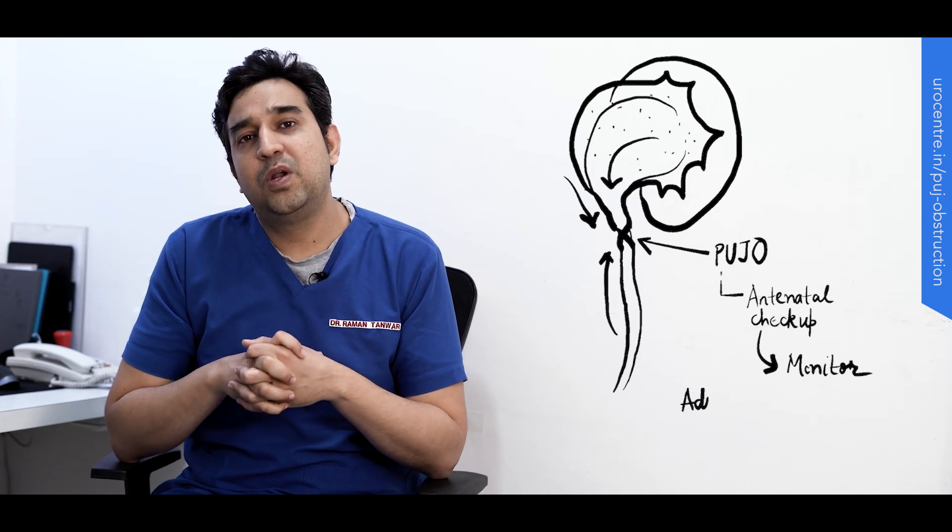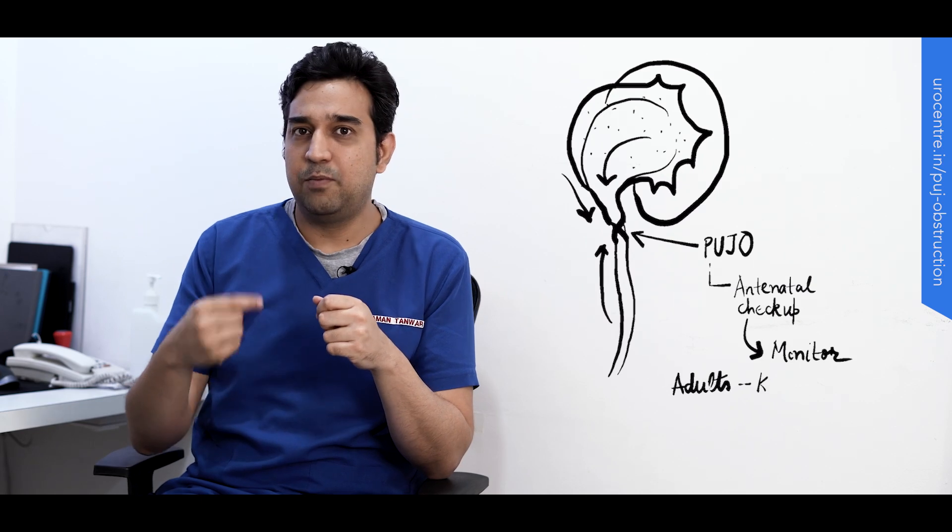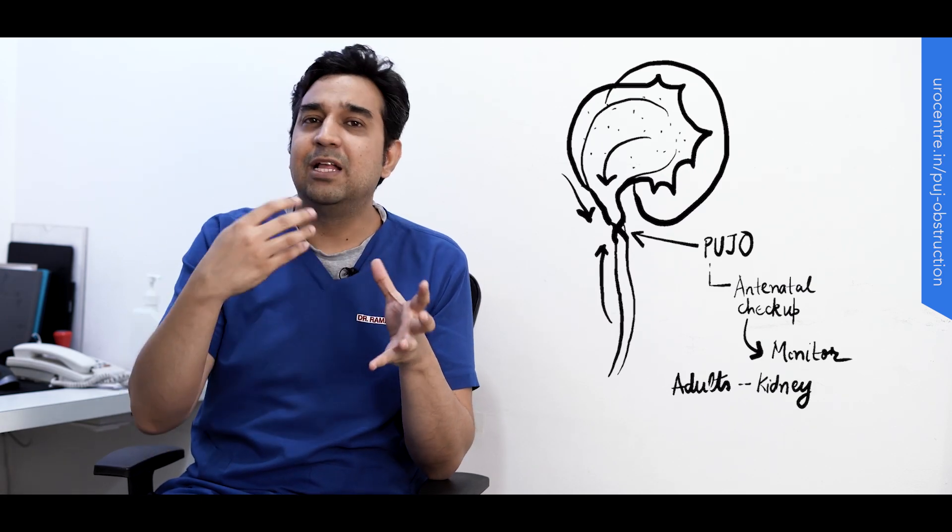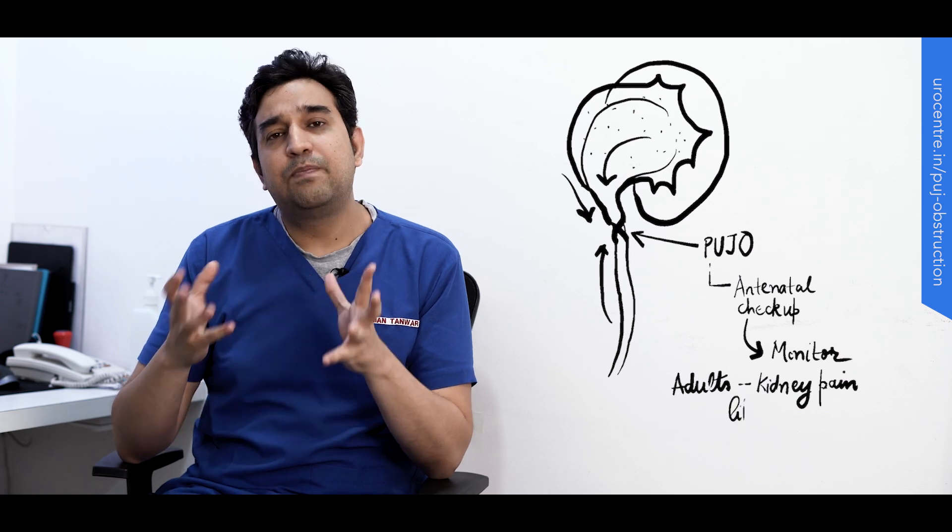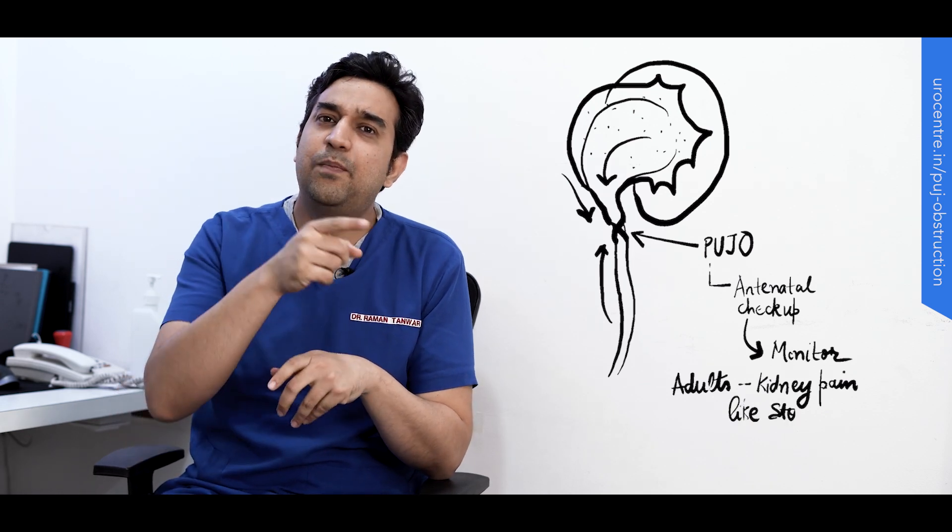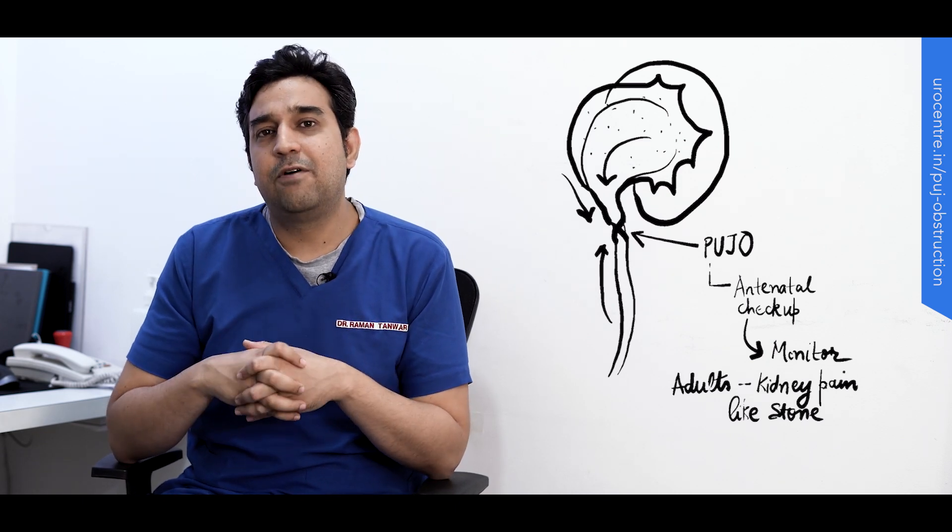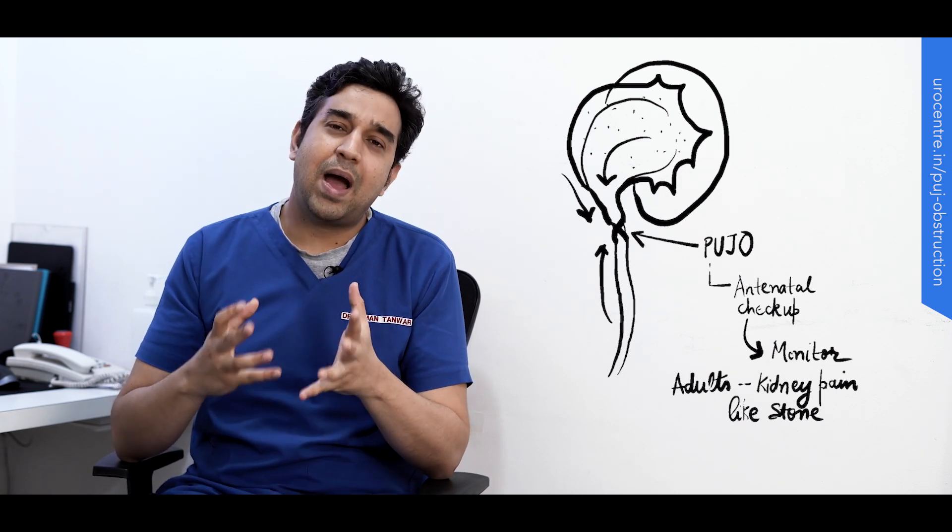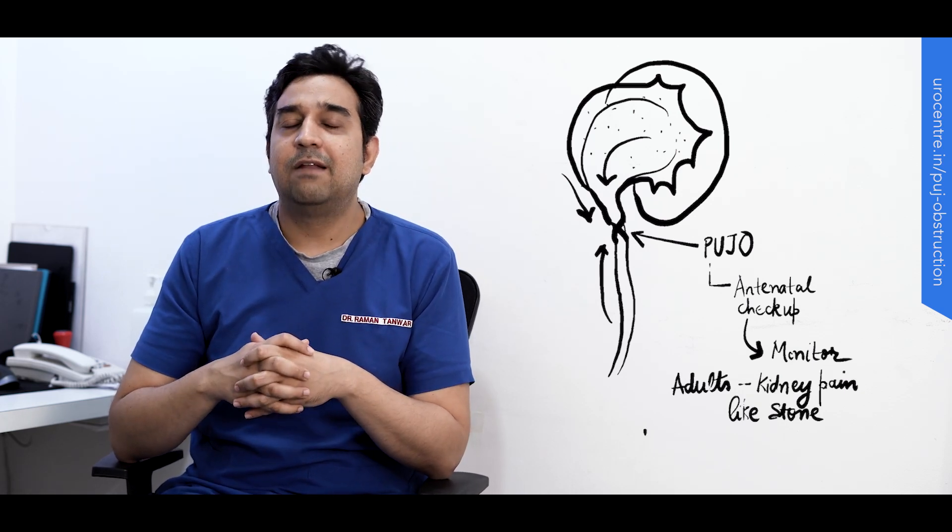Typically, this pyeloplasty we do with laparoscopic surgery. We just make two or three holes in the abdomen, and through that we put in our instruments and camera and then we do this surgery. While the pyeloplasty is being done, we typically put a stent which is called a double J stent, and this is kept inside for about six weeks.